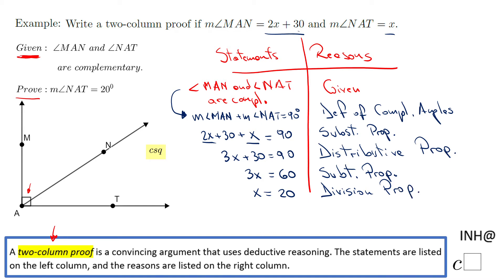One more step — we need to go back and replace this x in the original expression, and we get the measure of angle NAT equals 20 degrees. The reason for that is the substitution property of equality. That is what we call the two-column proof for this problem.